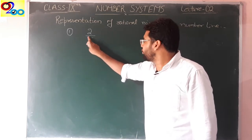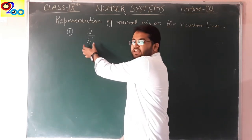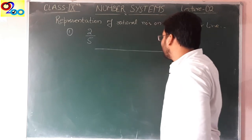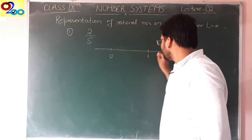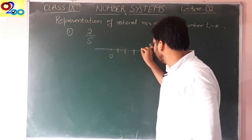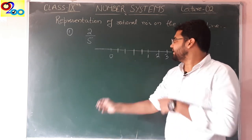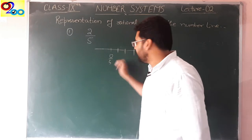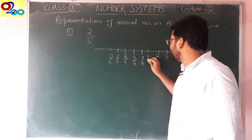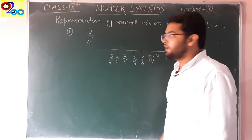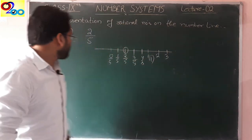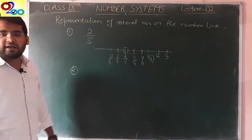If an improper fraction is given, we first convert it to mixed fraction and then represent it. Let's start with the first question: we have to represent 2 by 5. It is clear that 2 is the numerator and it is smaller than the denominator, so this is a proper fraction. Its value will lie between 0 and 1. The denominator tells us total number of parts — 5 parts. So we mark 0 by 5, 1 by 5, 2 by 5, 3 by 5, 4 by 5, and 5 by 5. This is where 2 by 5 lies.